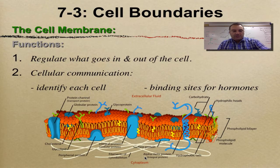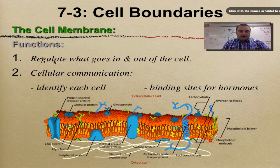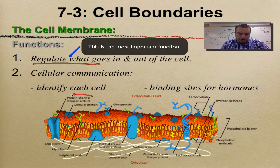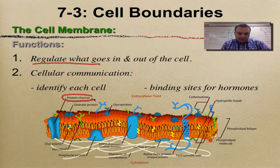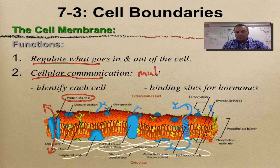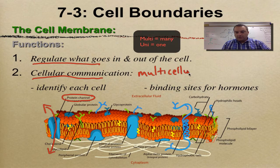As you can see here, there are two functions. Number one: regulate what goes in and what goes out of the cell, and that's going to be done by these channel proteins mainly. So stuff can come in this way and it can also go out that way. It's also going to be used in cellular communication, and this is really important especially in multicellular organisms.